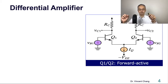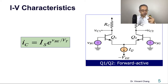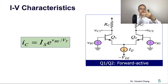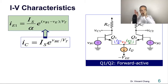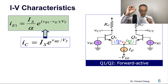Let's assume the two transistors are biased in the forward active region. When a transistor is biased in the active region, the relationship between IC and VBE is exponential: IC equals IS times exponential of VBE divided by VT. The IE1 can be written as saturation current divided by alpha, the common-base current gain, times exponential of VB1 minus the common emitter voltage VE.